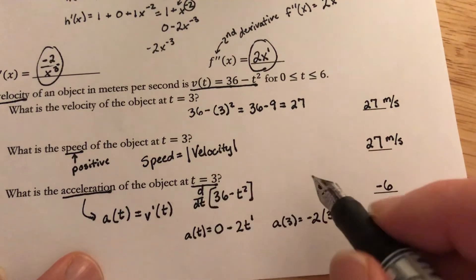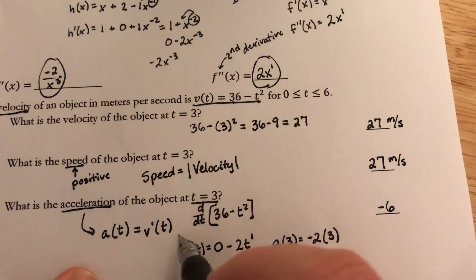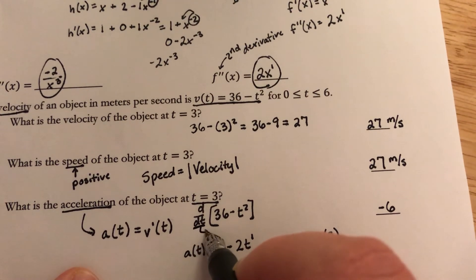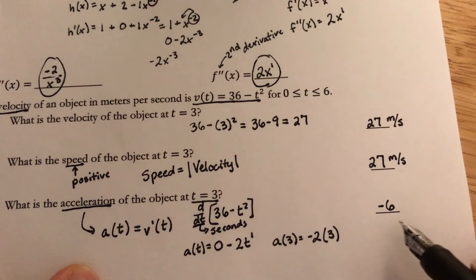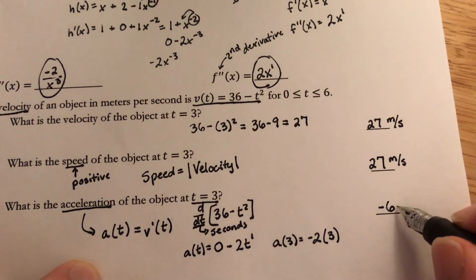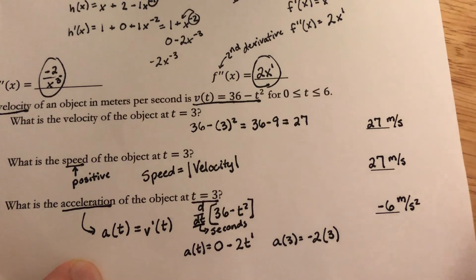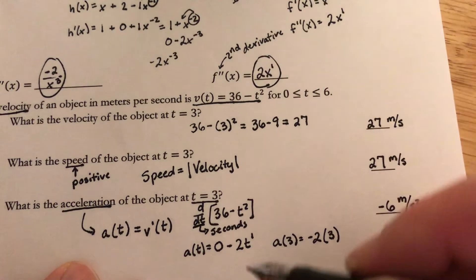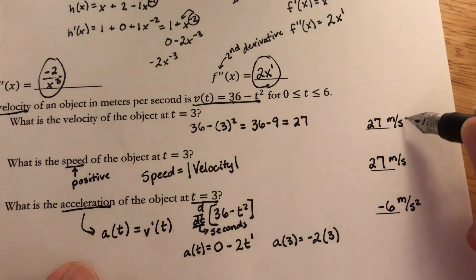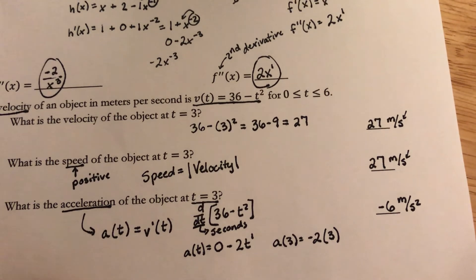Important thing to notice is how the units change. In this case, we are taking the derivative with respect to t, where t is in seconds. What this actually does is it adds another seconds down here in my unit. So it's actually meters per second squared, or meters per second per second. That's an important fact to know about units in derivatives. We're going to change whatever that denominator is, and we're going to sometimes square it or even cube it if we have to.